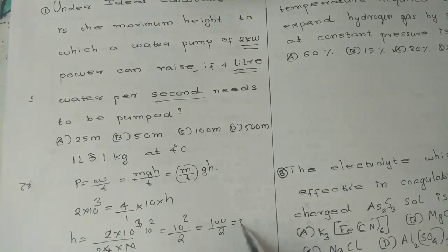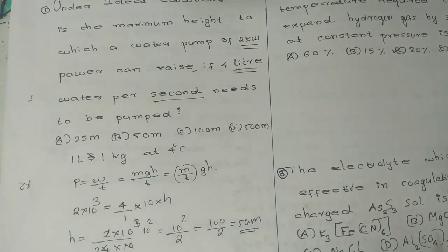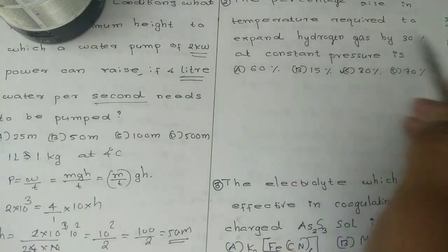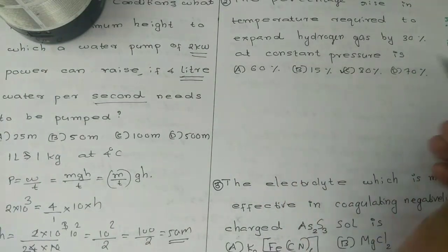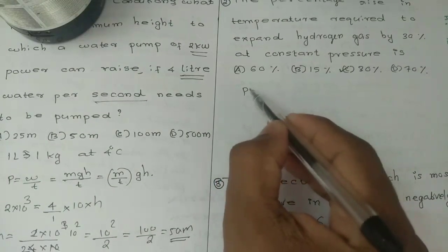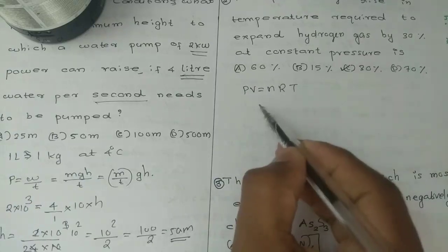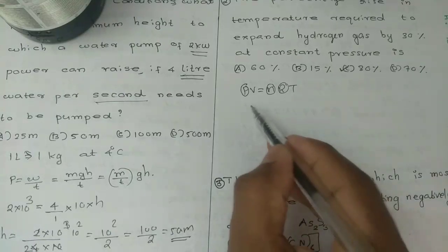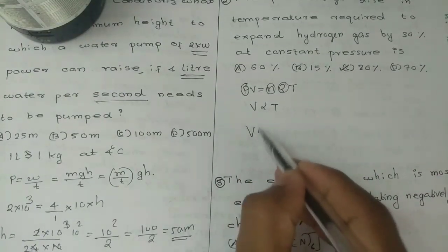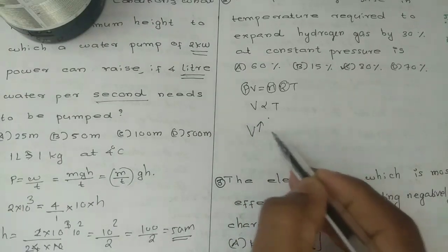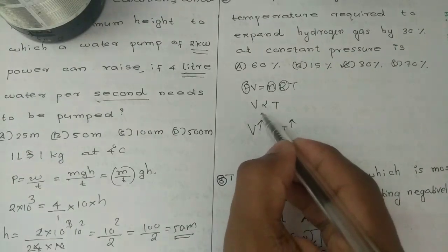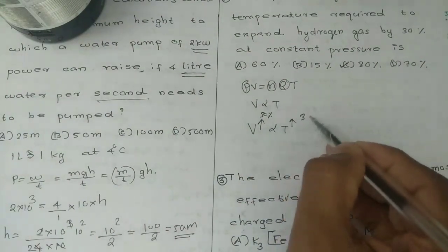Next problem: percentage rise in temperature required to expand hydrogen gas by 30% at constant pressure. Using the ideal gas law PV equals nRT at constant pressure, volume is directly proportional to temperature. So V is proportional to T. Since volume increases by 30%, temperature must also increase by 30%.